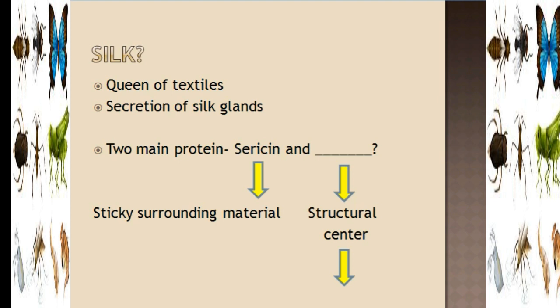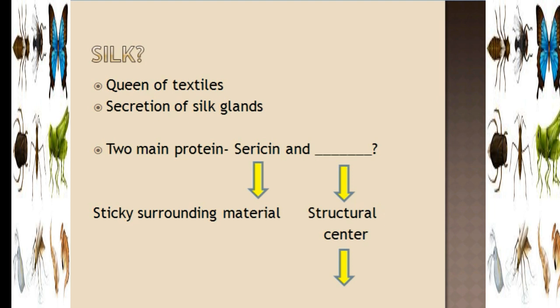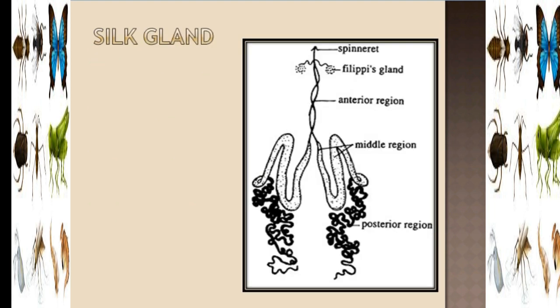Silk is called the queen of textiles due to its importance. Silk is made of two main proteins — one is sericin and the other is fibroin. Sericin is the surrounding sticky portion of the silk thread. Fibroin is a structural protein and is the dense central core of the silk thread.